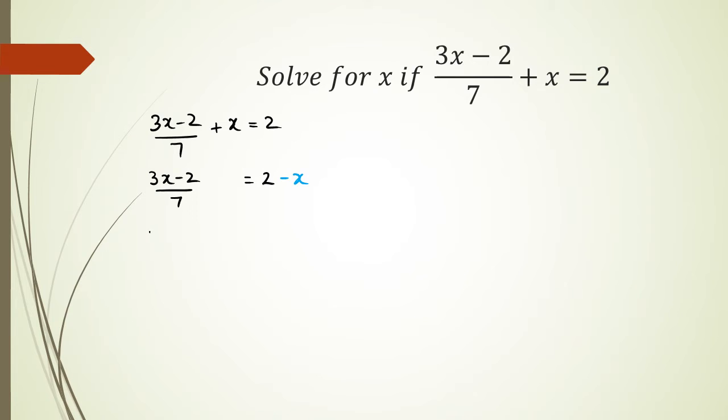The next step would be to get rid of the 7, so I have 3x - 2 equals, because 7 is being divided on the other end it's going to be multiplied, so 7 multiplied by 2 - x. It's really important to put that bracket around 2 - x.